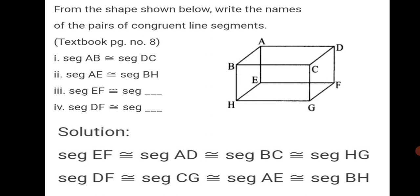Next, seg DF. Seg DF, as I told you, is congruent to seg CG. You can write in your textbook congruent to seg CG. Also, it is congruent to seg AE and also congruent to seg BH. This way, we can write the names of the pairs of congruent line segments.